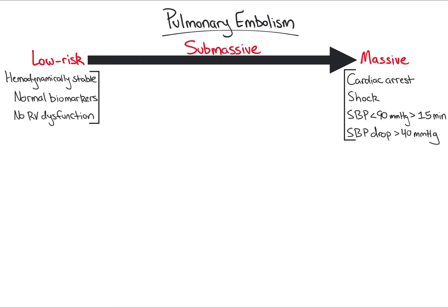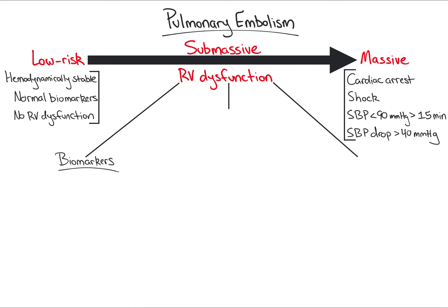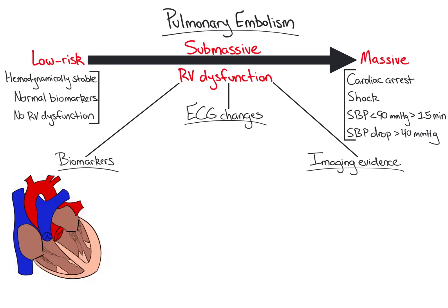Submassive PE is defined as acute PE associated with evidence of RV dysfunction. We evaluate for RV dysfunction by assessing for positive biomarkers, ECG changes, or imaging evidence of RV dysfunction. The relevant biomarkers include troponin and BNP or NT-proBNP. An elevated troponin indicates myocardial necrosis, and an elevated BNP indicates RV stretch and dysfunction.